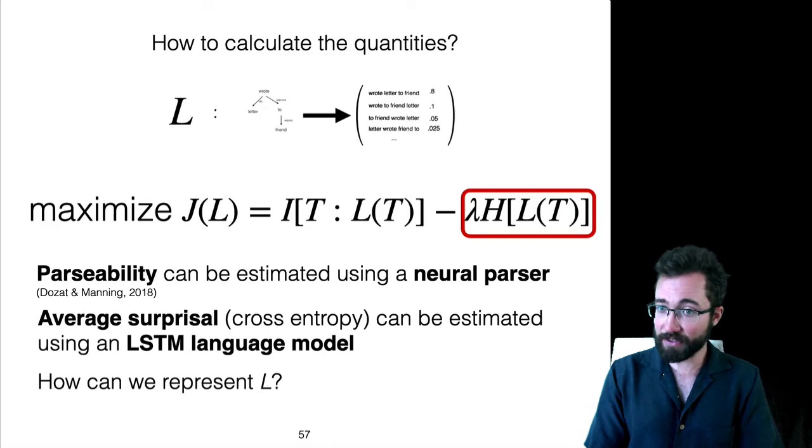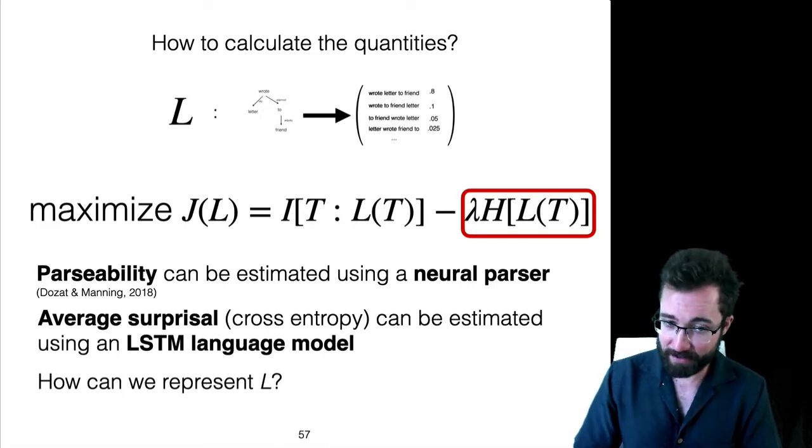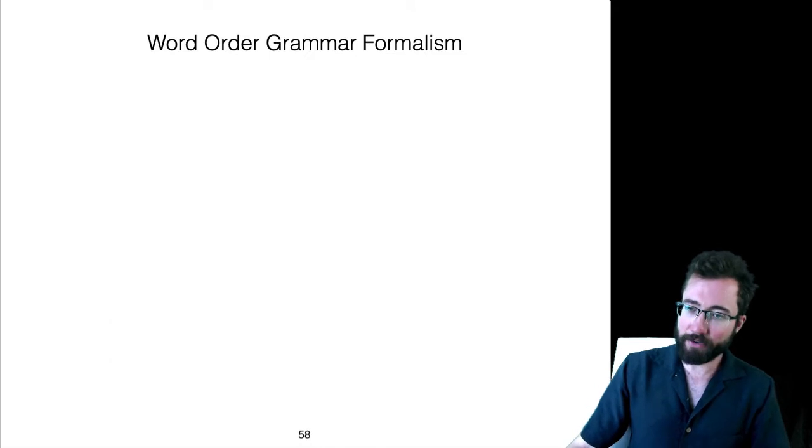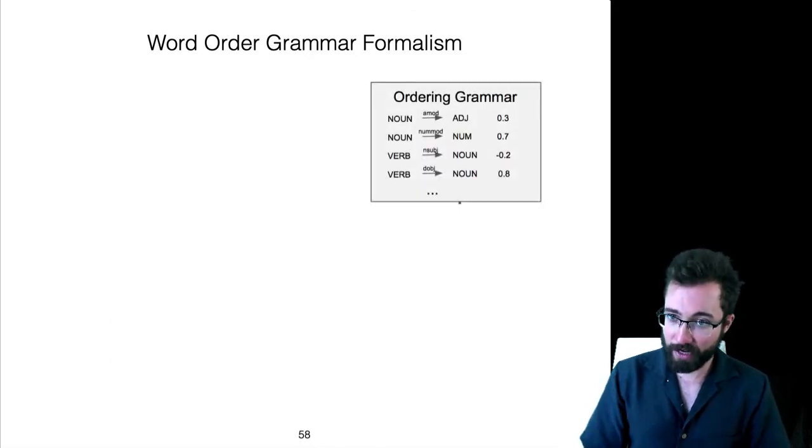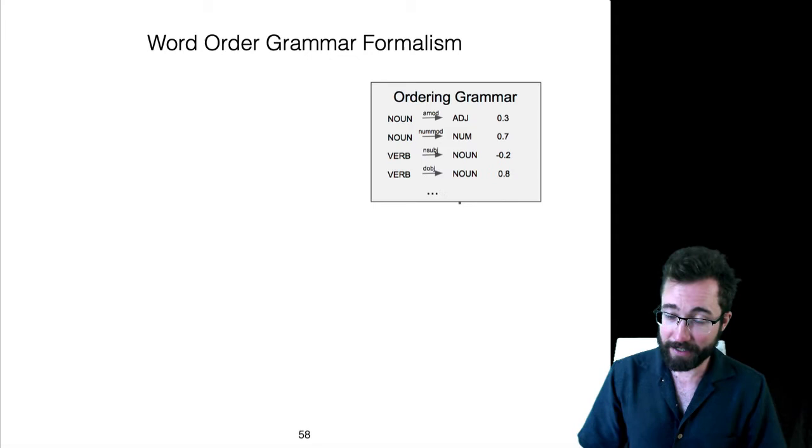The remaining question, then, is how do you represent the word order grammars L, so that you can actually perform this maximization? We're going to introduce this formalism for word order grammars that looks like this. A word order grammar consists of a mapping from these dependency relations, for example, nouns with adjectives modifying them, to real numbers.